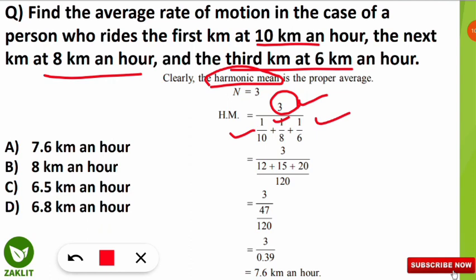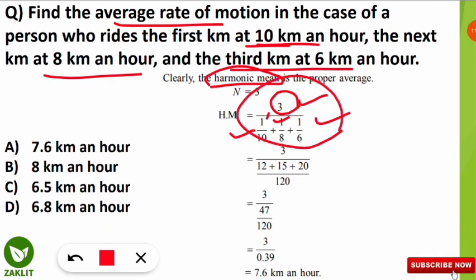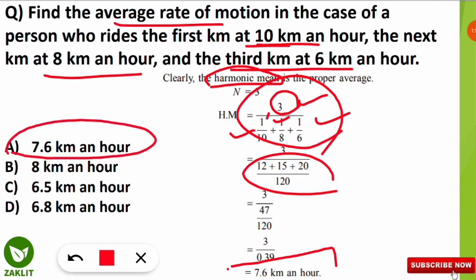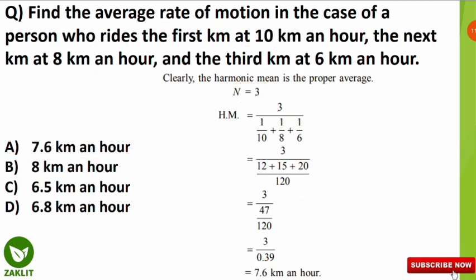Substituting: HM = 3 / (1/10 + 1/8 + 1/6). After solving all these terms, the value comes to 7.6 km/h, which is the correct average speed. Hit option A for full marks. Whenever equal distances are covered at different speeds, always use harmonic mean.